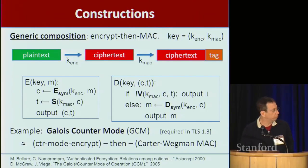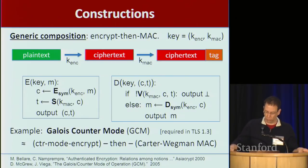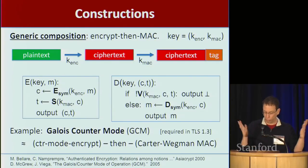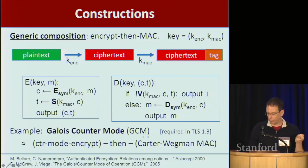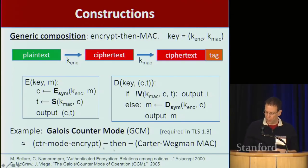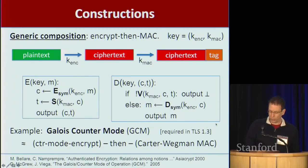There's a well-known standard called Galois counter mode, now required in TLS 1.3. TLS 1.3 is one of the big developments in crypto this year — it was just ratified. It's a much nicer protocol than earlier versions of TLS and is going to be widely deployed. The required method of encrypting in TLS 1.3 is using GCM, although other methods are supported as well. The way that works is you encrypt using counter mode and then compute a MAC using something called a GHASH-based MAC, which is a very fast MAC.